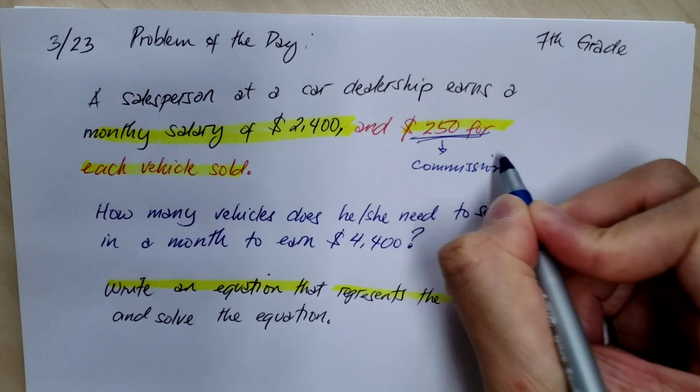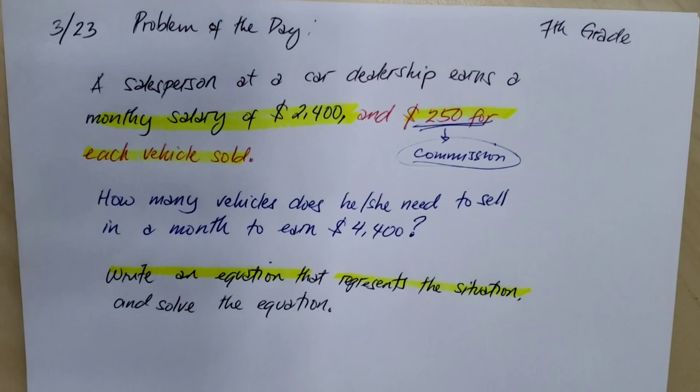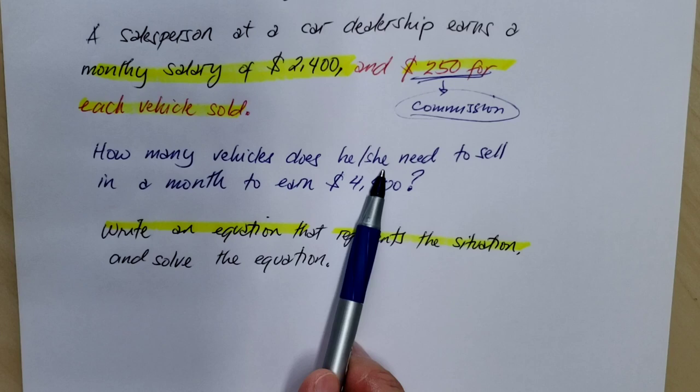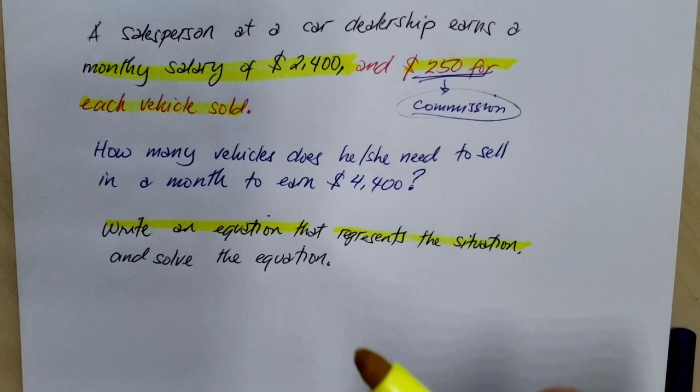Commission, money you get for selling something. Now how many vehicles does the salesperson need to sell in a month to earn $4,400? This is the person's goal.